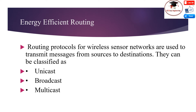In most sensor network scenarios, these devices acquire data from the environment and send it to other nodes for further processing and analysis. When such destinations are not within the radio range of the source node, intermediate sensor nodes are used as relays. Routing protocols for wireless sensor networks are used to transmit messages from source to destination. They can be classified as Unicast, Broadcast, and Multicast.